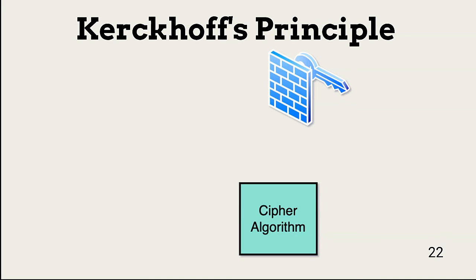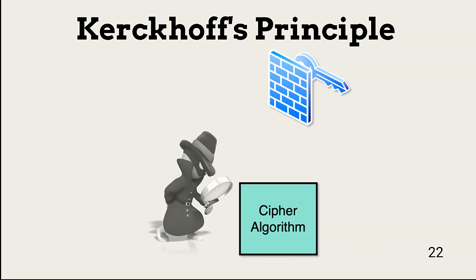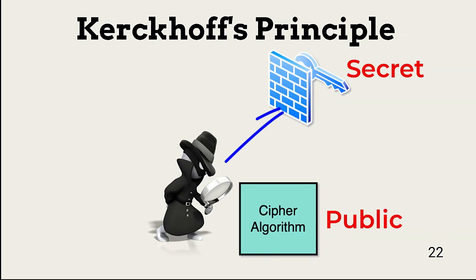An important principle in cryptography is Kirchhoff's principle. It states that security of a cipher should not depend on keeping the underlying algorithm or process secret — instead, it should only rely on keeping the key secret. No cipher should rely on secrecy of how it works. Before any cipher algorithm is used, it should be reviewed and tested by as many cryptanalysts and cryptographers as possible. If a vendor tells you it used a proprietary private cipher to protect application data, look for another vendor.